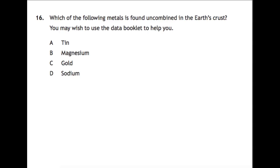Question 16. Which of the following metals is found uncombined in the earth's crust? It says that you can use your data book to help you. I would recommend probably page 10 in your data book where you have the electrochemical series. The metals at the very bottom of the electrochemical series are the least reactive and therefore most likely to be found uncombined in the earth's crust. If you look for the least reactive out of the four that you have there, you'll find that it's gold.